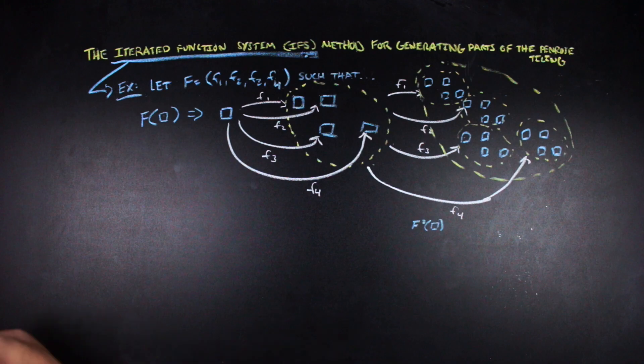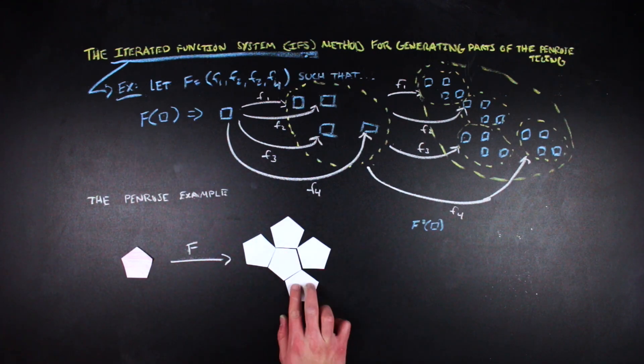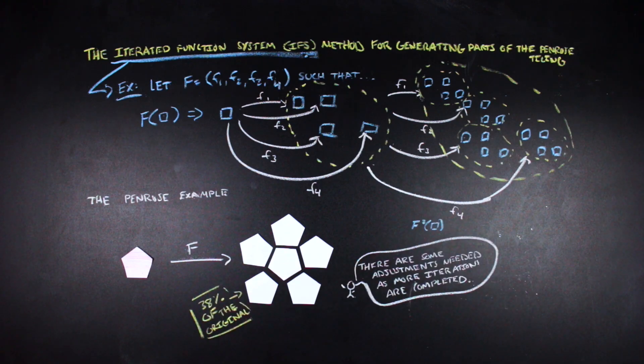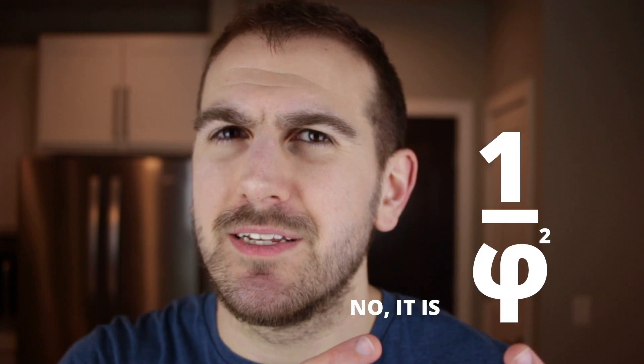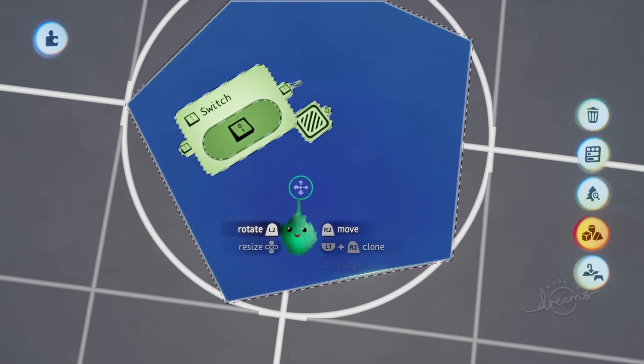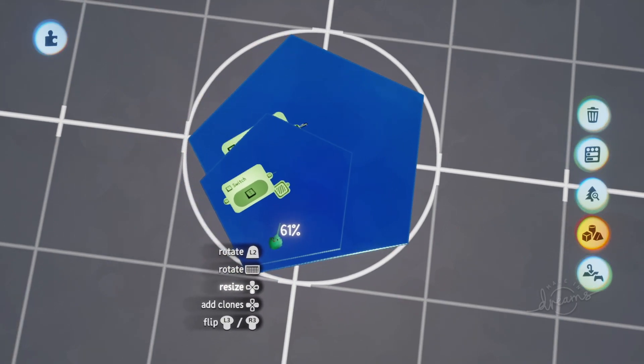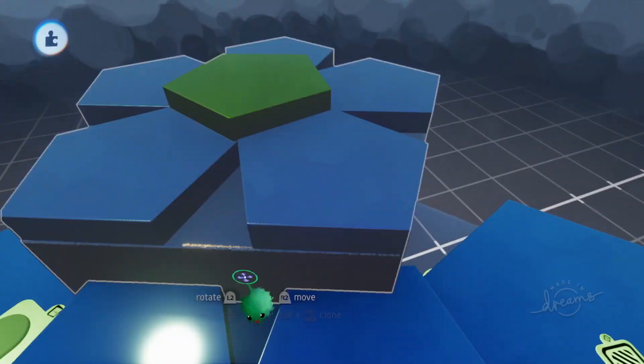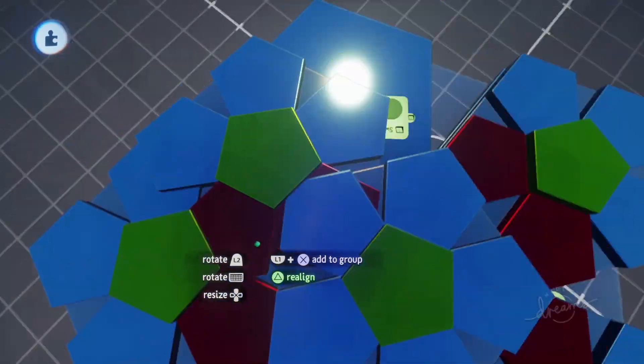So for the Penrose Tiling, the iterated function system is actually quite simple to grasp. So what it does is it takes the Pentagon and it sends it to six different pentagons, all 38% of the size of the original. And the reason I'm saying 38% of the size is because it's actually one over the golden mean in size. I think that's right. I will check that and put it here somewhere, but I'm pretty sure that's correct. No, it is one over the golden mean squared. And so that iterated function system is actually really easy to realize in Dreams. All I had to do was take the Pentagon shape and then scale it down by 38% and then place them inside the original Pentagon, and then repeat that process by taking those new six pentagons and scaling them down even further.